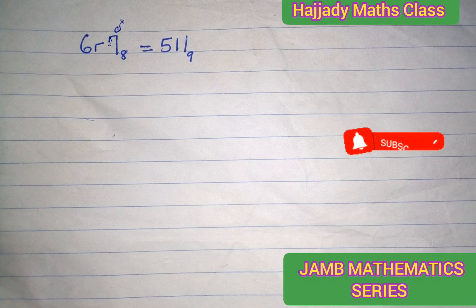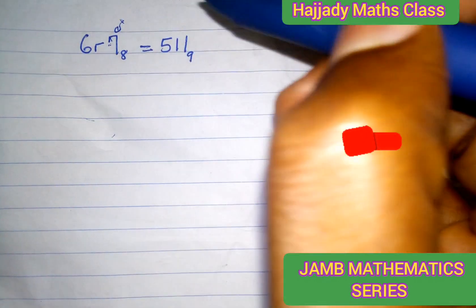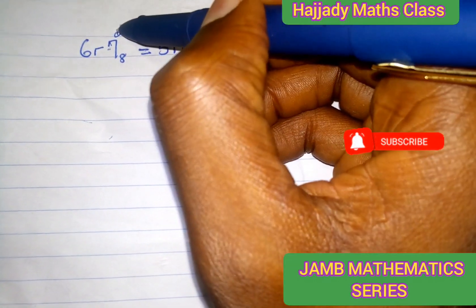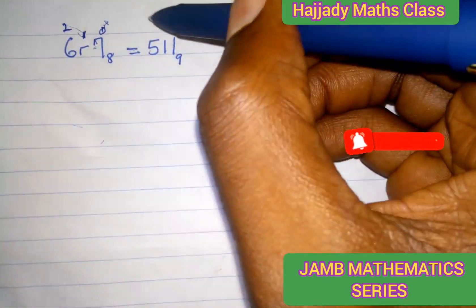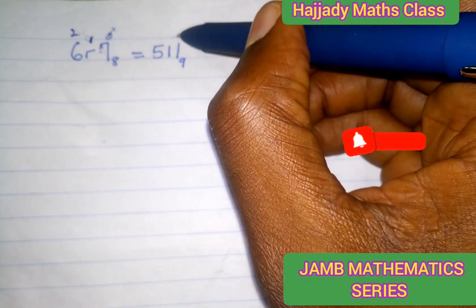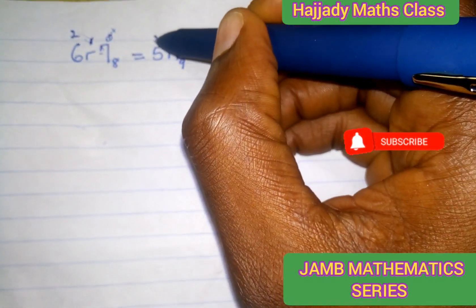Here there is a need for us to convert to base 10. And by doing so, we are going to assign values to the power of this. Here we have 0, 1, 2. And here also, we start with 0, 1, 2.